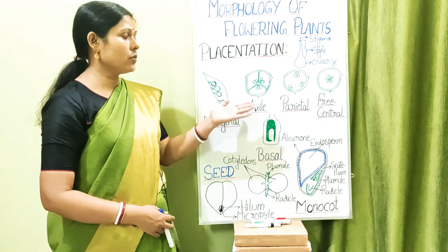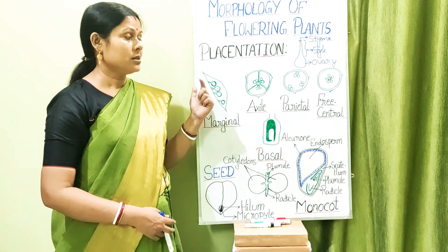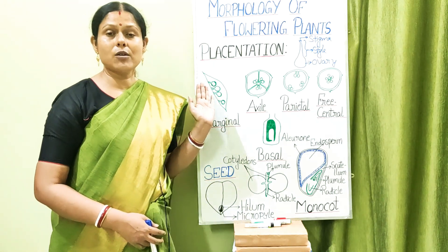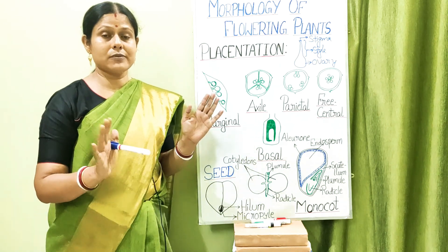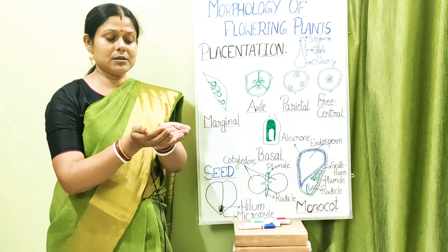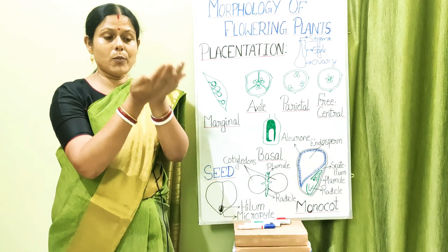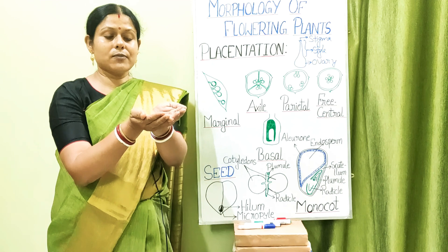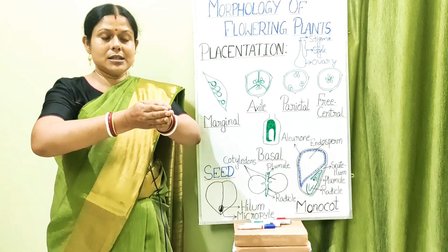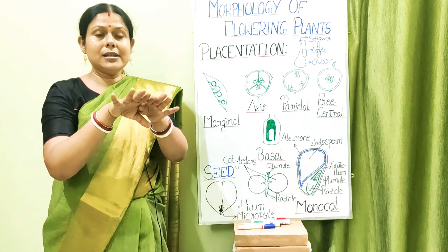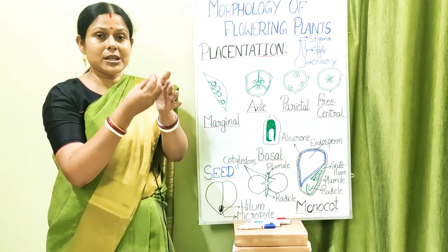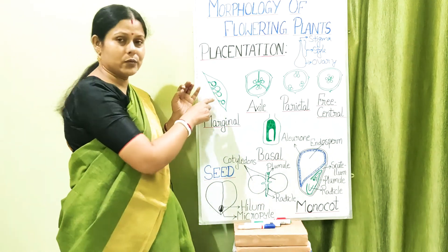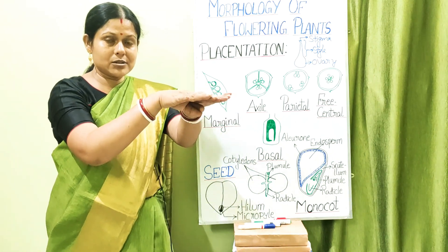Depending on the arrangement of ovules inside the ovarian wall, there are five types of placentation in angiospermic plants as discussed in your NCERT book. The first is marginal placentation, commonly seen in pea plants. When the pea pod forms, it creates a ventral suture, and parenchymatous tissue develops from the inner wall along this margin, connecting to the ovules. This type of placentation along the margin is called marginal placentation.